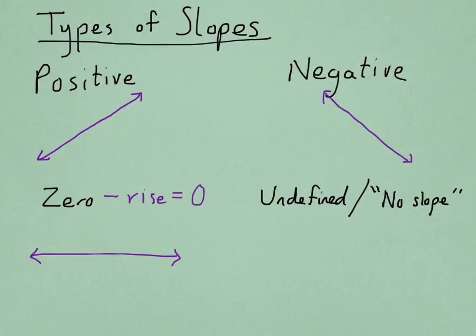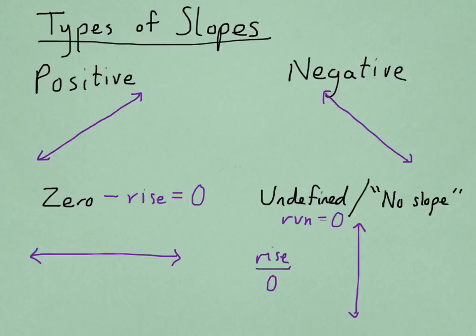Now, if it's the other way around and the run is zero, that means we have a vertical line. The reason this slope is undefined is because we have some rise divided by zero. You can't really divide a number by zero, so this results in a number that is not defined, or undefined. Note that some textbooks call this 'no slope,' even though that might imply zero slope — keep in mind that there is a difference.